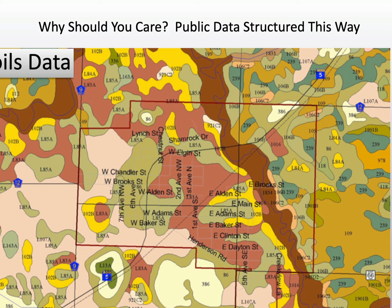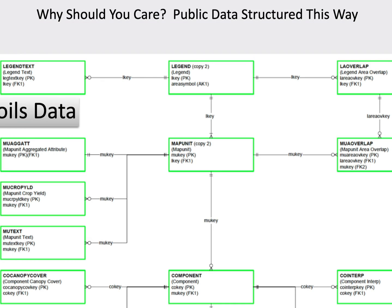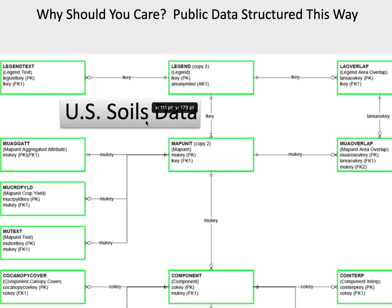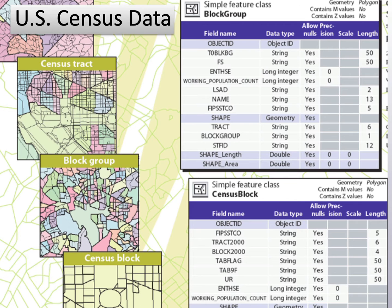Why should you care about normal forms? Lots of data are delivered in normal form. Soils data gives you basically their data in a set of tables, and each of those tables is in normal form and linked by keys — they show you the primary key and foreign keys. The same thing with census data: they have a series of tables, and other people generate tables designed to be attached to U.S. census data, taking advantage of the properties of normal forms and keys.